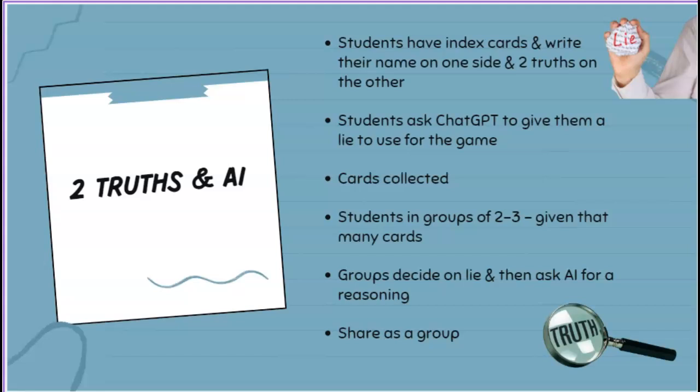I gave students an index card and asked them to write their name on one side and two truths about themselves on the other. I did tell them not to necessarily list the two truths first, otherwise it'll be obvious that the very last one on the card is the lie. So I gave them that tip before we started. Once they had their two truths, the students asked ChatGPT to give them a lie to use for the game.